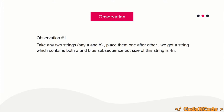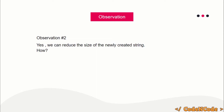Now for the observation: take any two strings, call them A and B, and place them one after another. Since we created the new string by placing one string after another, we are sure that A and B exist as subsequences in that string. But the problem is the size of this string is actually 4n, because A and B are both of length 2n, so we are going over the 3n limit.